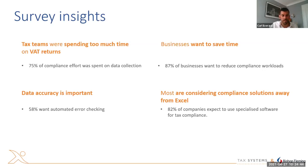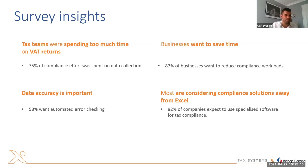Businesses always want to save time - 87% want to reduce compliance workloads. With HMRC initiatives, compliance workloads are being increased year on year, so where you're doing things manually you really should be looking at how you can automate those to reduce the compliance burden. What's really interesting is that around data accuracy, businesses are starting to lose confidence in their VAT return process - they know there are errors within the return but it's very hard to spot, so they're introducing more checks. 58% want to automate error checks.